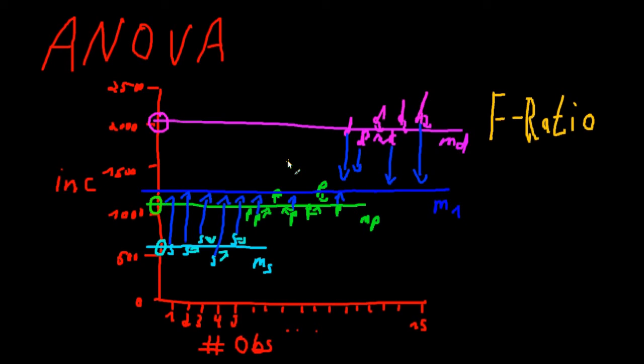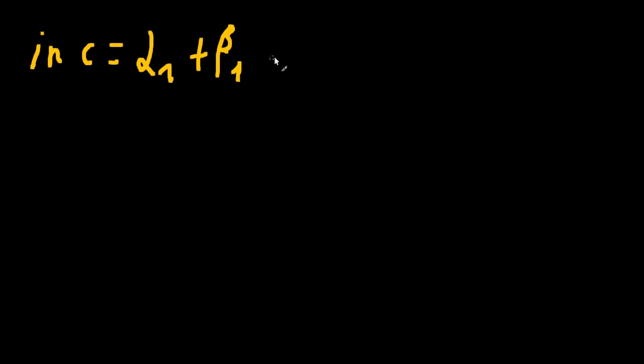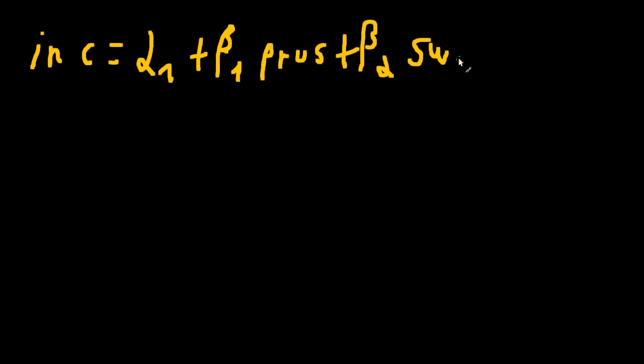Now, there's also another way to think about ANOVA: you can think of ANOVA as a kind of dummy regression. Getting back to our previous example, how could we rephrase our problem as a regression? That's actually pretty easy — just use two dummy variables for nationality.